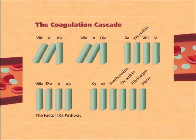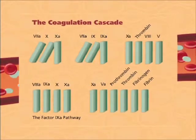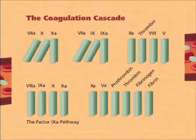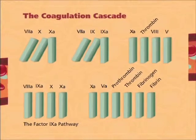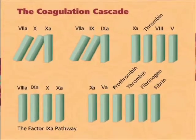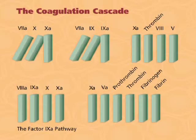However, further generation of factor Xa is inhibited by the tissue factor pathway inhibitor. At this point, the amount of factor Xa produced is insufficient to sustain coagulation. Further factor Xa to allow hemostasis to progress to completion can now only be generated by the factor IXa pathway.